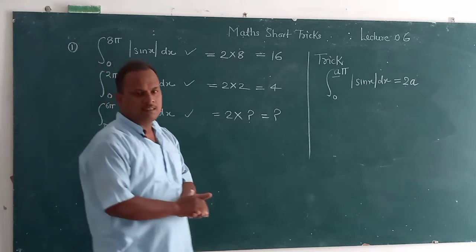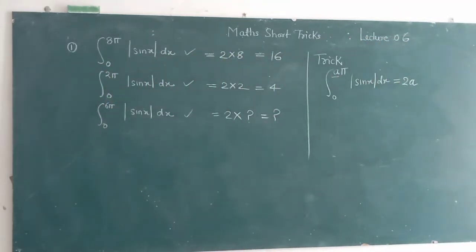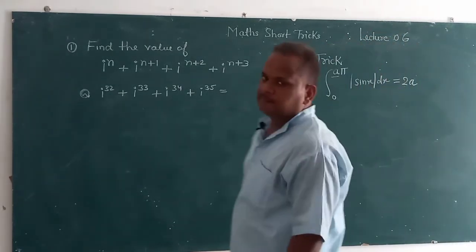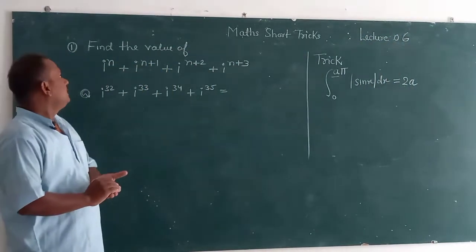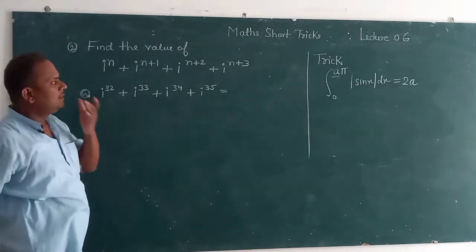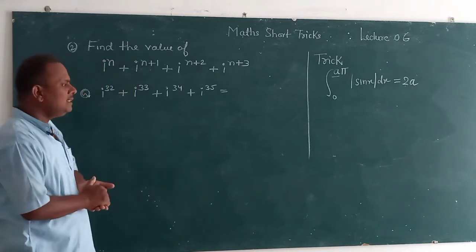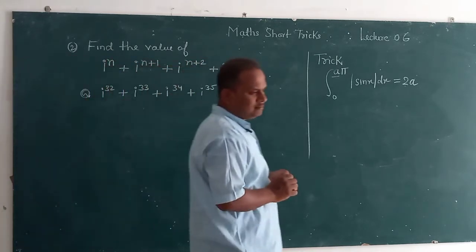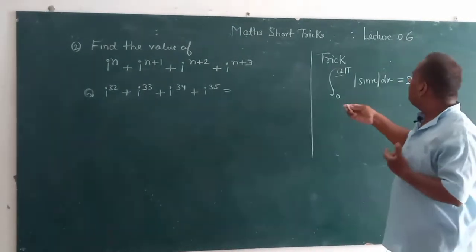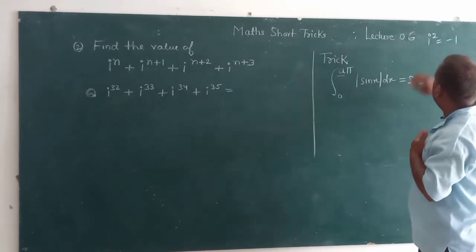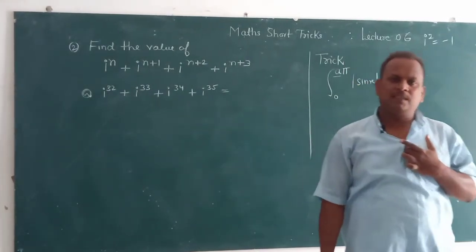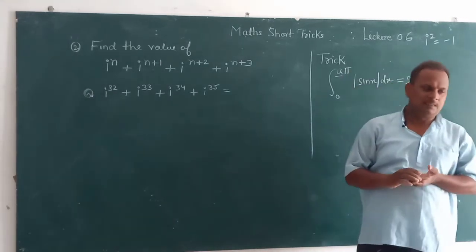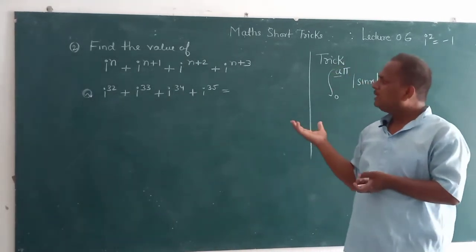I am going to take another question. This question is complex numbers related. In complex numbers you will have studied i square equal to minus 1. i is an imaginary number. So competition some related questions are there and the children are confused and then leave this question.